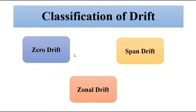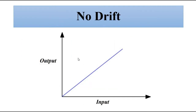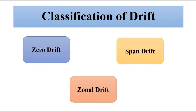The classification of drift — the various kinds that occur in a measurement system — are: zero drift, span drift, and zonal drift. First, let us see the condition of no drift, which is the ideal situation. Here the input-output relationship curve or calibration curve is a linear curve — this is the ideal desired condition.